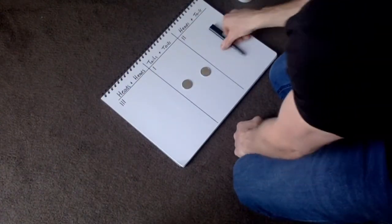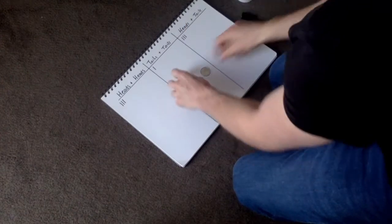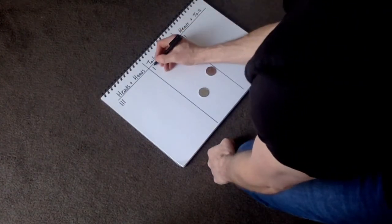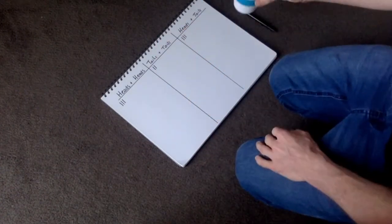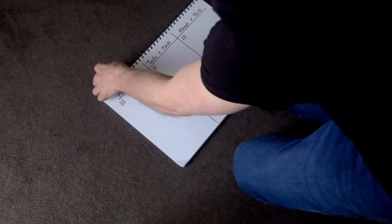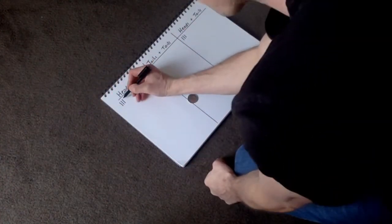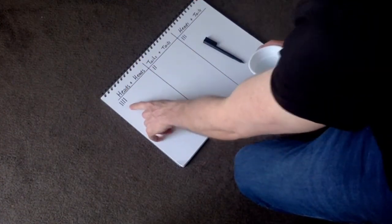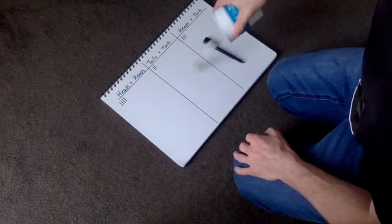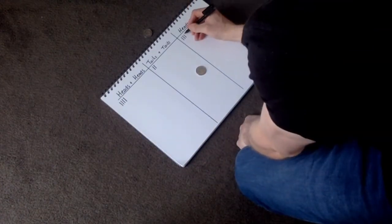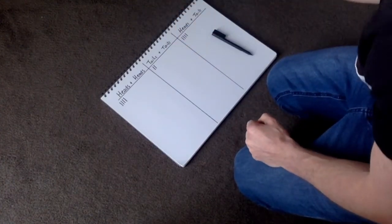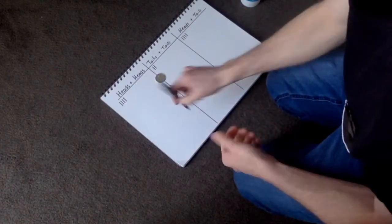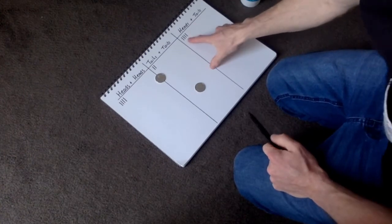So again. Oh, I've got a heads and a tails. So I'm going to put that one there. Again. Okay, so I've got tails and a tails. Okay, so now I've got four. Heads and tails, so I've got another one. I've got five.